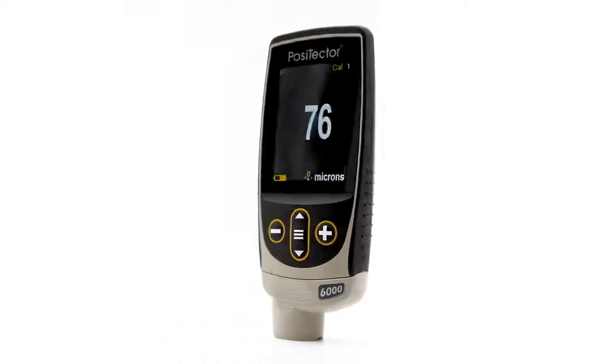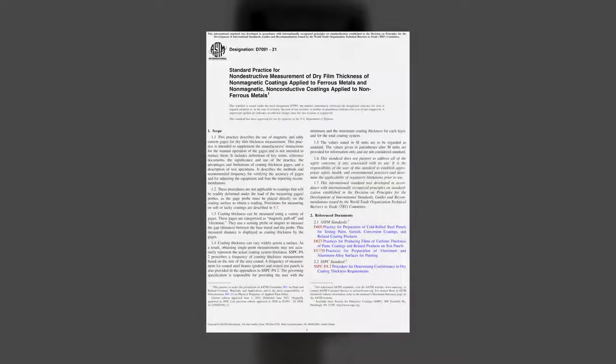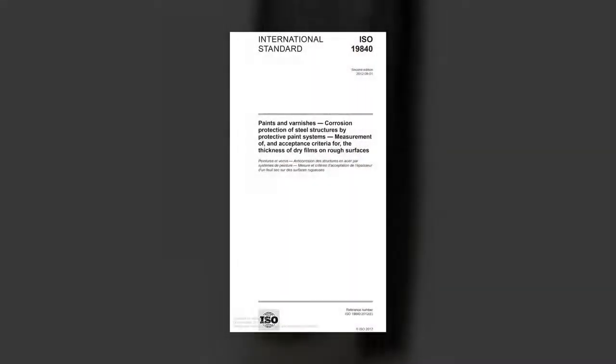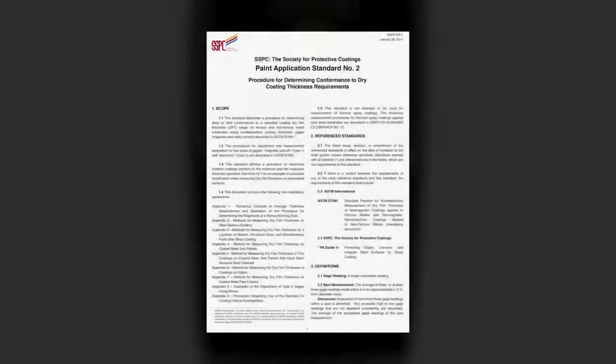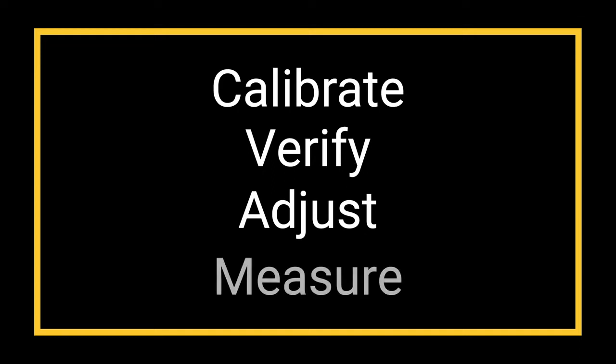Taking a dry film thickness measurement with the PosiTector 6000 is simple. Standards such as ASTM D7091, ISO 19840, and SSPC PA2 describe the following four operational steps for all coating thickness gauges: calibrate, verify, adjust, and measure.